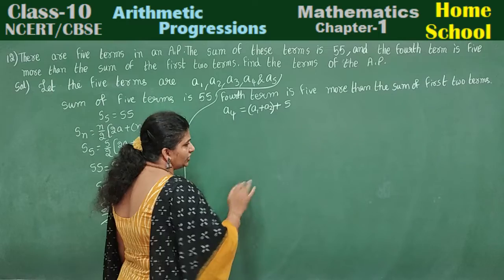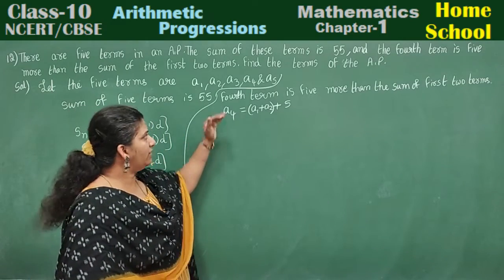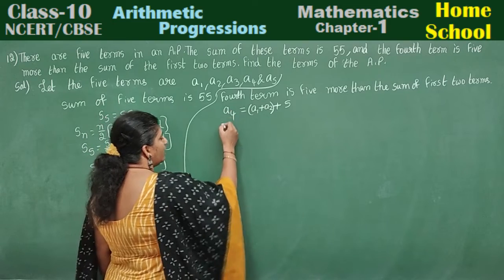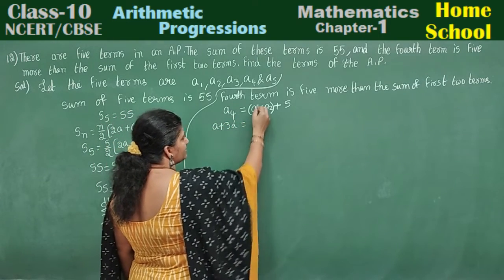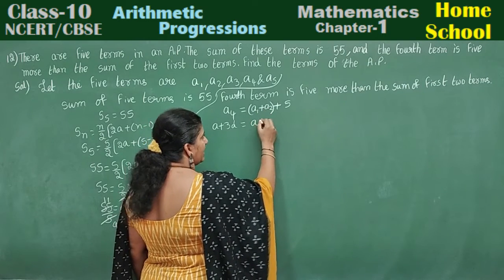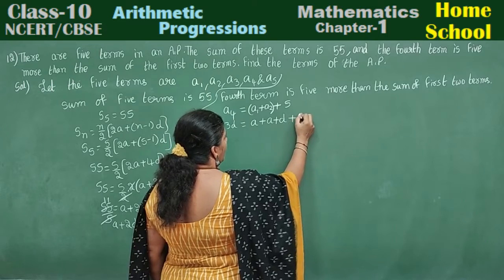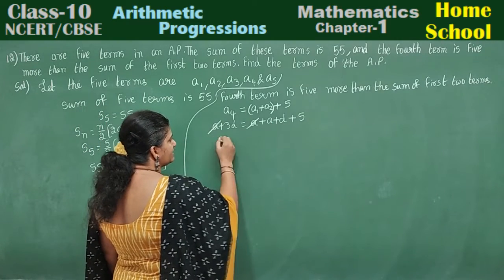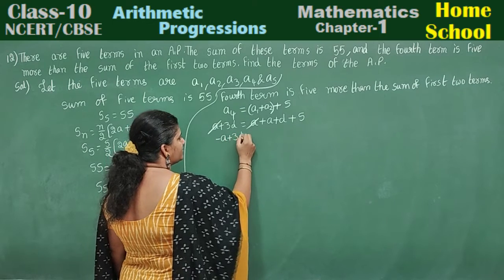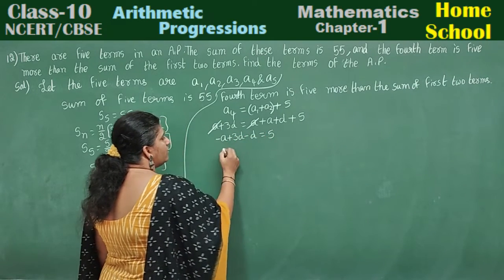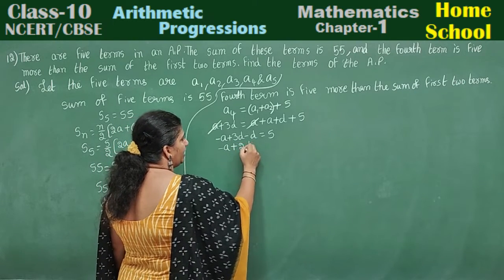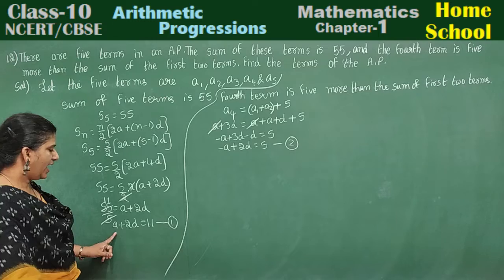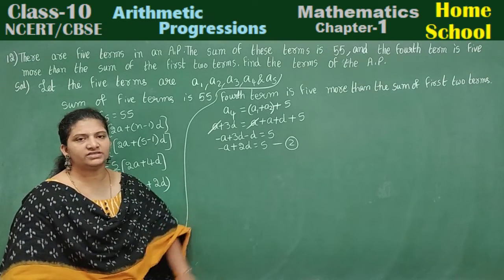Now write this in general form. The fourth term is five more than the sum of the first two terms: A plus 3D equals A plus (A plus D) plus 5. One A and another A cancel. Bring A and D to one side: minus A plus 3D minus D equals 5. So minus A plus 2D equals 5. Mark this as the second equation.